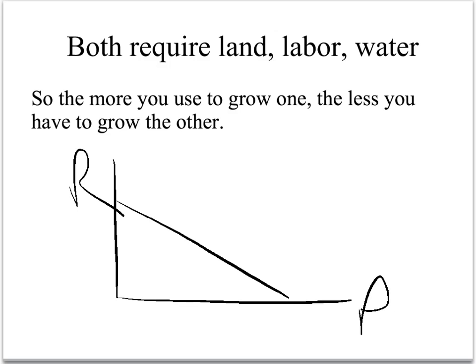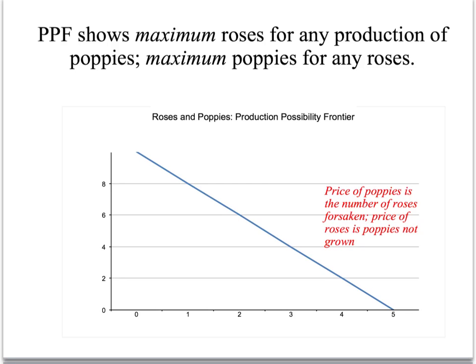Here's roses, here's poppies. The more you use your land to grow one of them, the less you have to grow the other. If all your land is in roses, you're there — lots of roses, no poppies. All your land is in poppies, you're over there. The price of poppies is the number of roses forsaken — the number of roses that you don't have anymore. The price of roses are the poppies not grown.